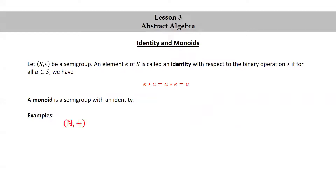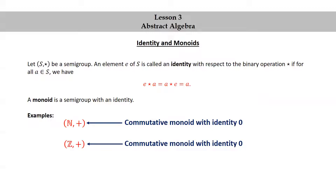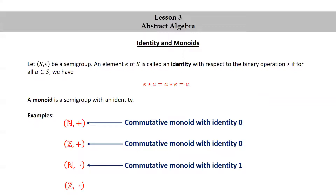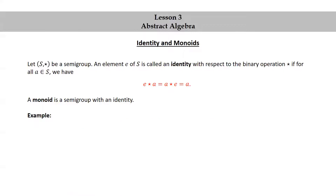Let's look at some more examples. The set of natural numbers with addition is a commutative monoid with identity 0. The set of integers together with addition is also a commutative monoid with identity 0. The set of natural numbers together with multiplication is a commutative monoid with identity 1. The set of integers together with multiplication is also a commutative monoid with identity 1. 2Z, the set of even integers together with addition, is also a commutative monoid with identity 0.